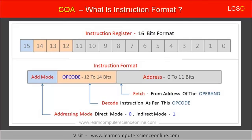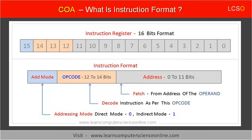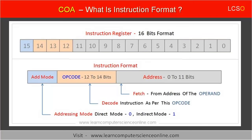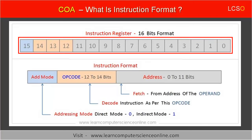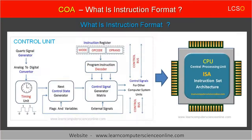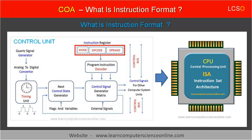The next field of the instruction format is opcode, which stands for operation code. During program execution, the instruction is fetched into the instruction register, IR. The instruction register is a 16-bit register, and a part of the IR is used to store the operation code. For a 16-bit instruction format, the group of 3 bits numbered 12, 13, and 14 indicates the operation code. The operation code, opcode, is decoded by the decoder of the control unit as per the instruction set architecture of the CPU.